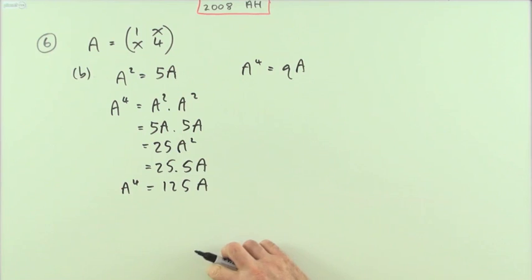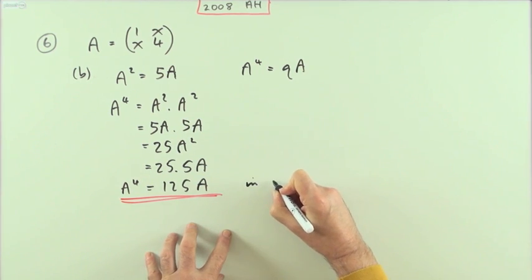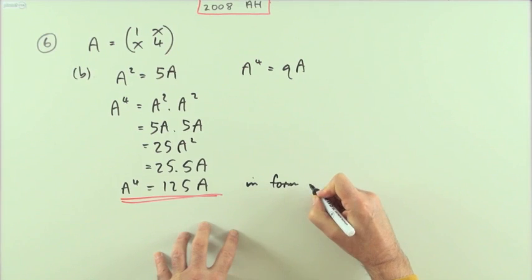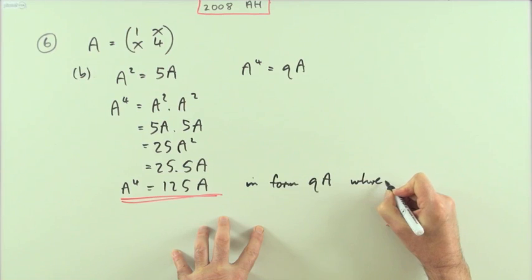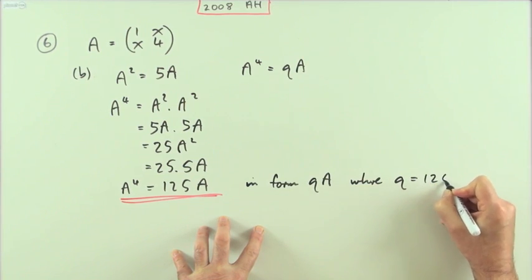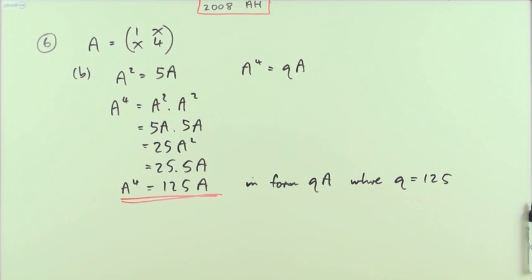Which should do for the answer, but again let's just play safe and say in the form qA where in this case q is 125, just for a little bit of small print to cover you.